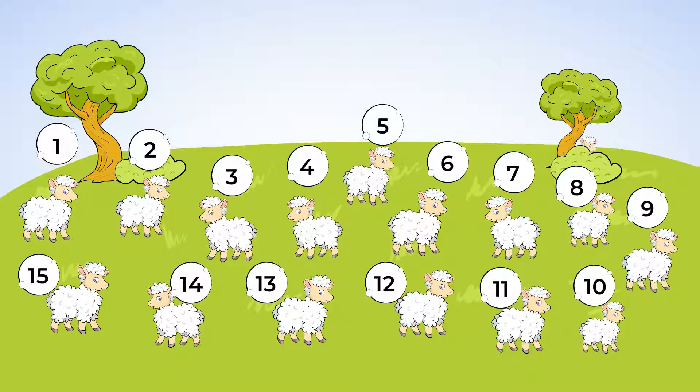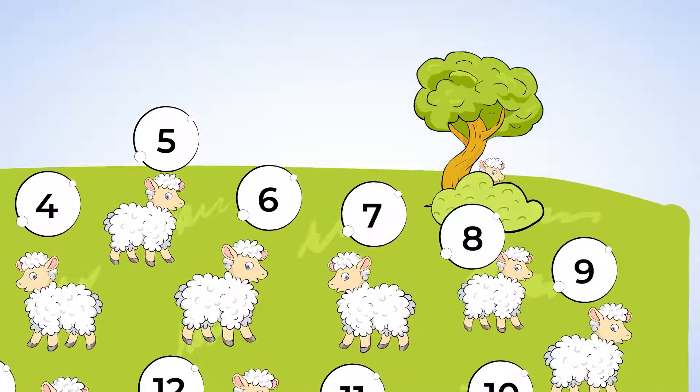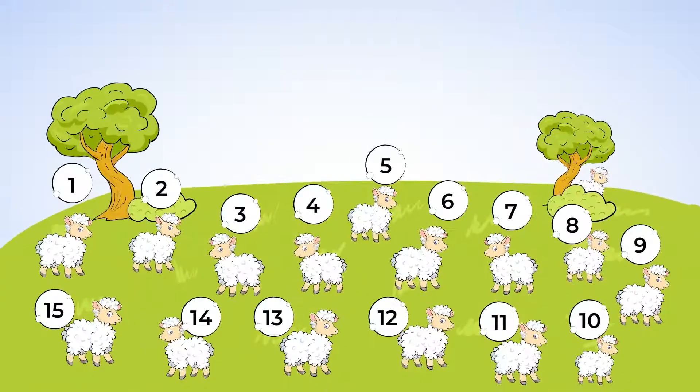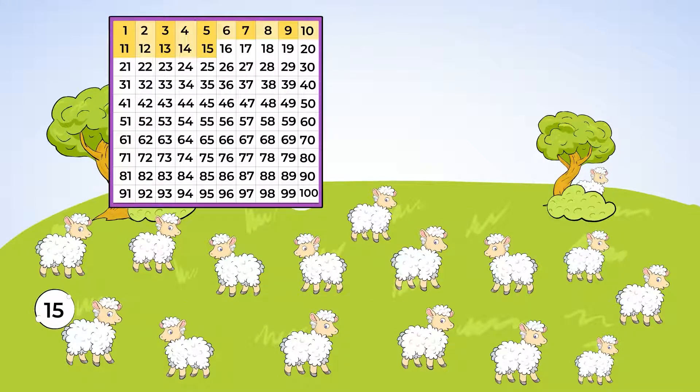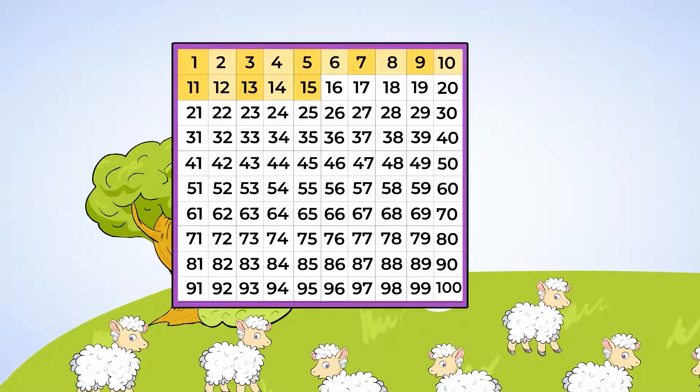Wait a second though. Some of the other animals like to hide. I wonder if any lambs are hiding from us. Let's look. Aha, there's one behind the tree. Now if we already counted to 15 lambs and there's one more, how many lambs are there in total? Let's take a look at the hundred chart for the number that comes after 15. One more after 15 is 16. There are 16 baby lambs waiting for their mama.